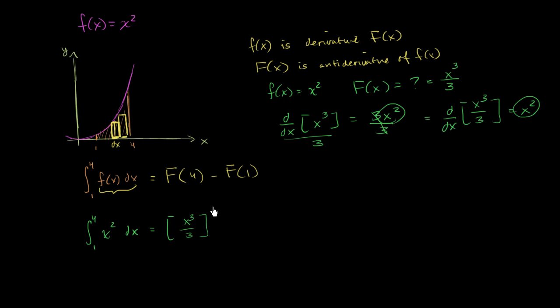But I'll just do it without the line. So we're going to evaluate this thing at 4, and from that subtract it, evaluate it at 1. So this is going to be equal to 4 to the third power of 64. So it's going to be 64 over 3. Let me color code it. This right over here is this right over there.